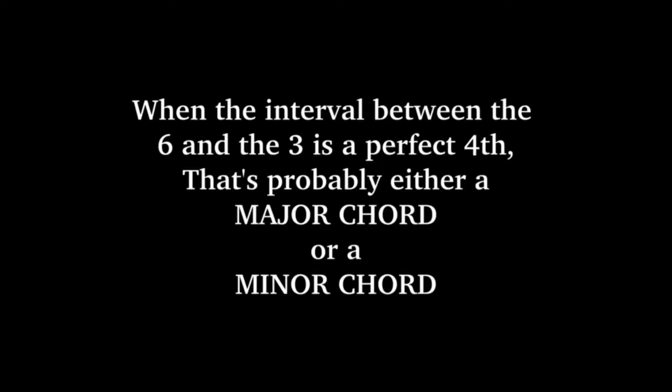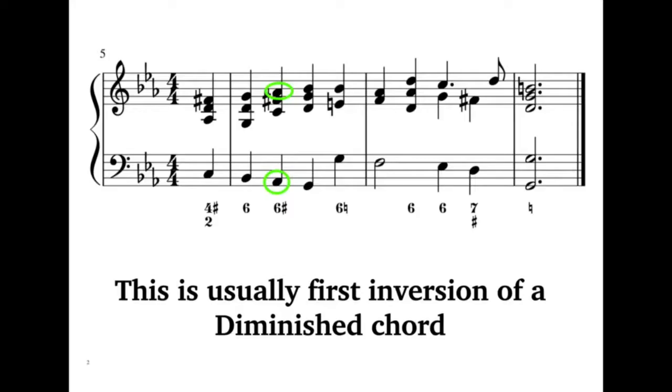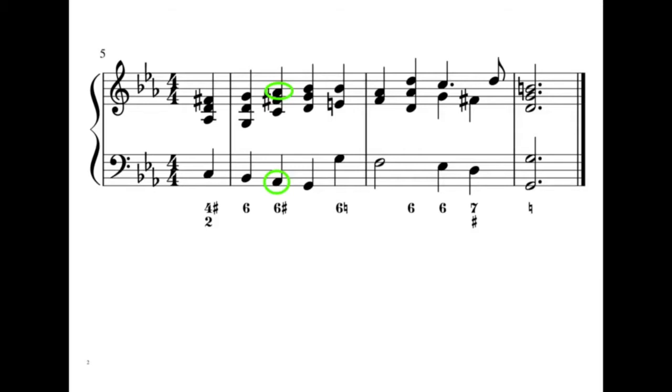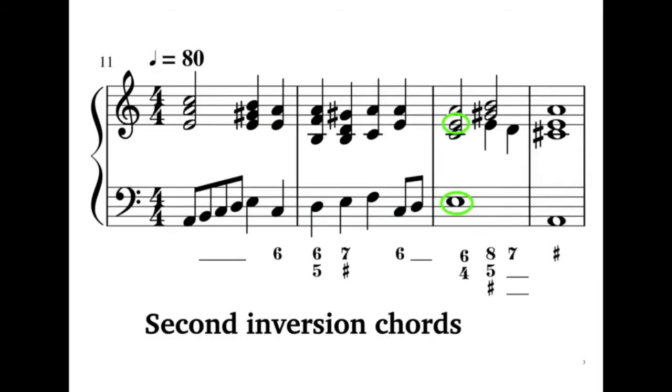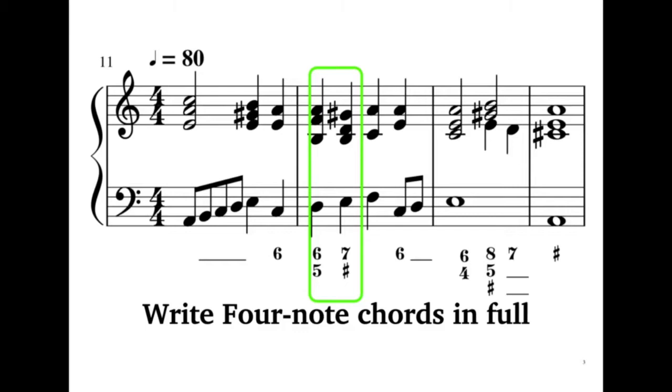This is usually the doubling rule for six-three chords if the interval between the six and the three forms a perfect fourth. If the interval between the six and the three forms a diminished fourth, the bass should be doubled instead. For six-four chords, always double the bass note, which is usually the fifth of the chord. Always write four note chords in full. The only possible exception is seven-five-three where the five can be omitted without losing much color.